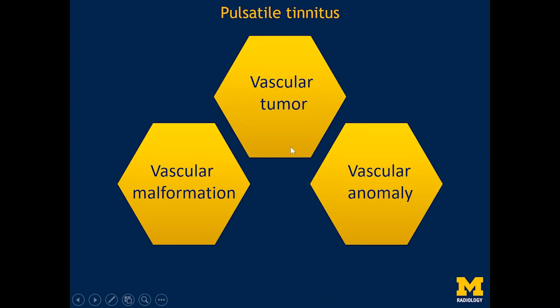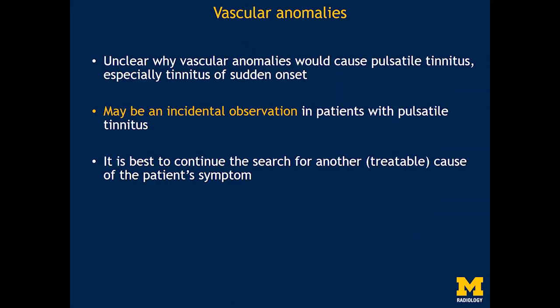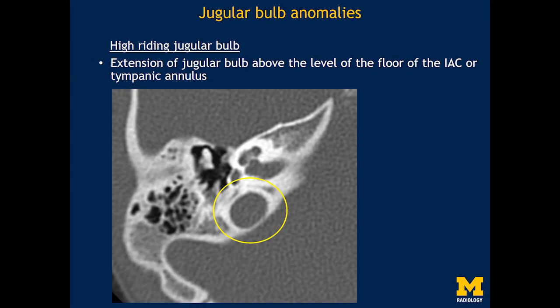So we've seen two categories: vascular tumor and vascular malformation. The third category that can cause pulsatile tinnitus is a vascular anomaly. It is unclear why a vascular anomaly — which may have been present since birth — can cause pulsatile tinnitus. If you discover a vascular anomaly, please remember it may be an incidental observation, so keep searching for another cause. In some patients, pulsatile tinnitus can occur if the flow dynamics through that anomalous vessel change — for example, if a proximal stenosis develops, the distal vessel has changes in flow velocities that can then be perceived as tinnitus.